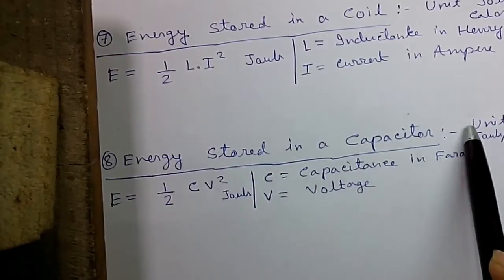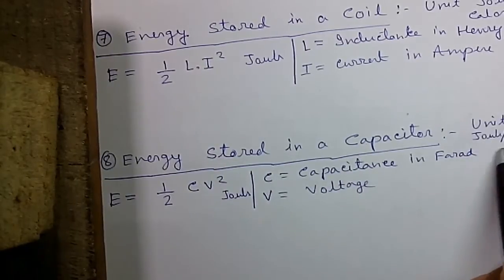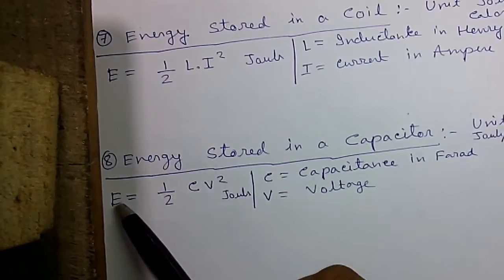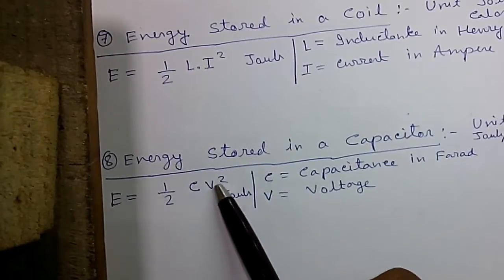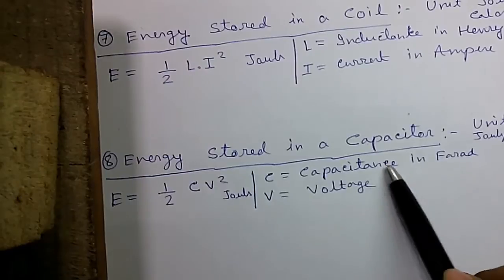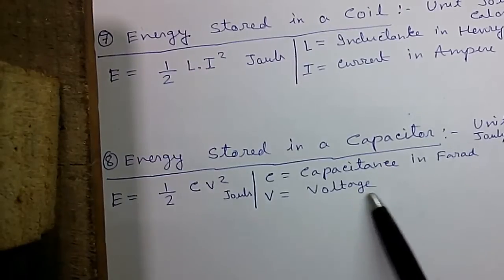Formula eight, energy stored in a capacitor, unit is again joules or calories. So E equals to half into Cv square joules, where C is the capacitance in Farad and V is the voltage.